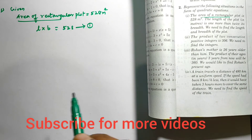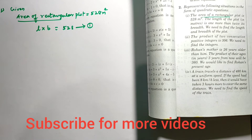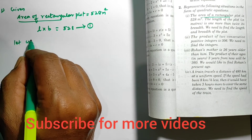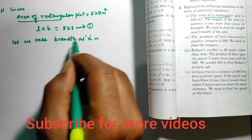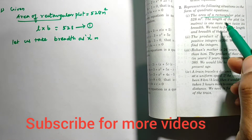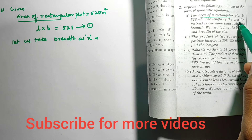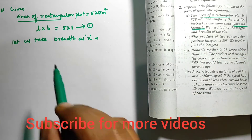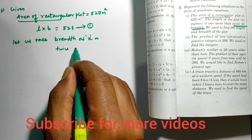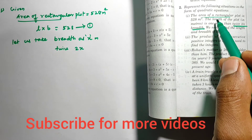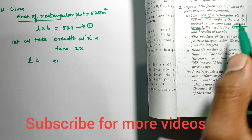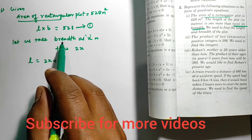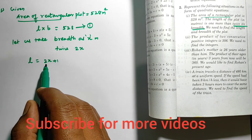We don't know the length and breadth, so let us consider one dimension as variable x. Let breadth = x meters. According to the question, the length is one more than twice the breadth — twice the breadth is 2x, and one more gives us length = 2x + 1.